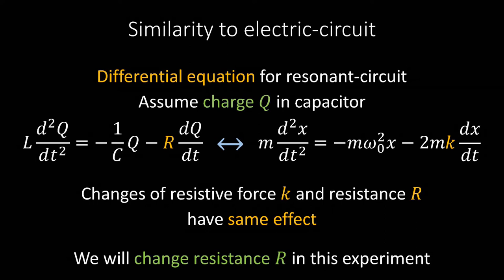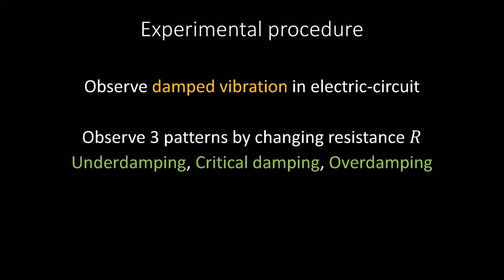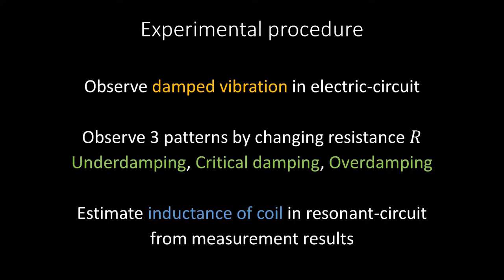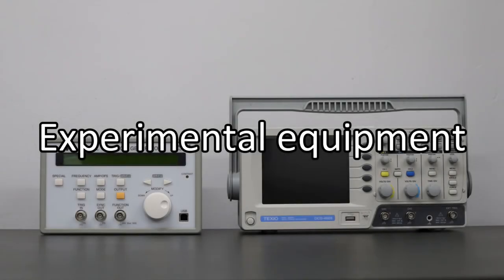By changing the resistance R, we can observe the waveforms of the three patterns of damped oscillation — underdamping, critical damping, and overdamping — and measure the voltage and period. We also estimate the inductance L of the coil from the measurement results. Here is the equipment used in the experiment.